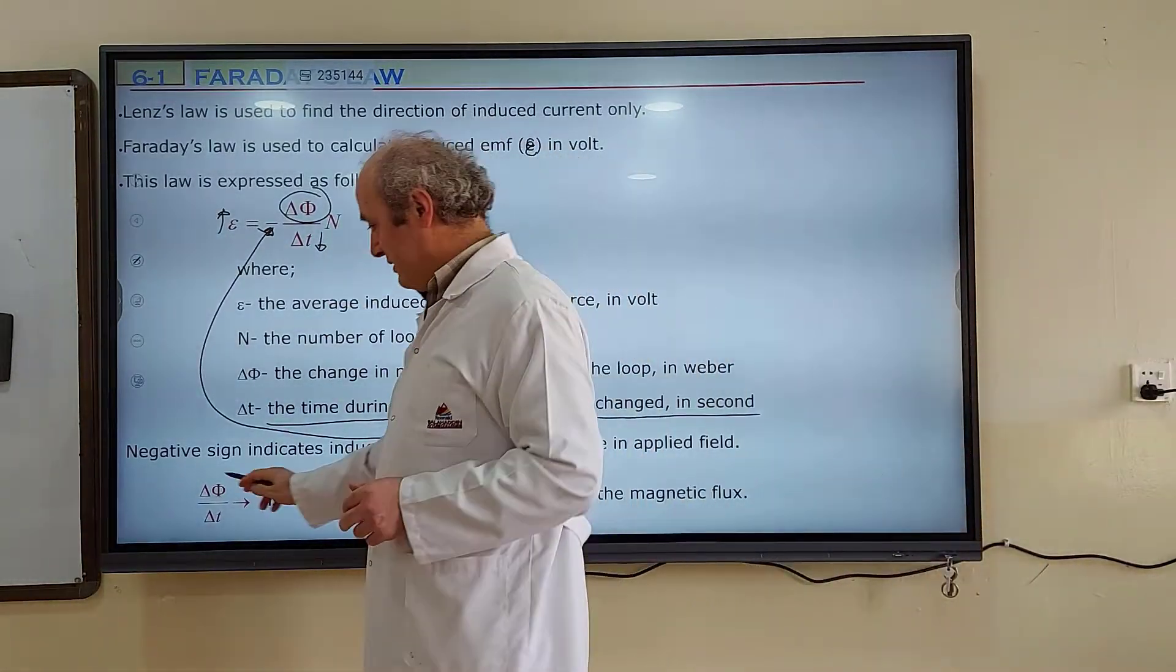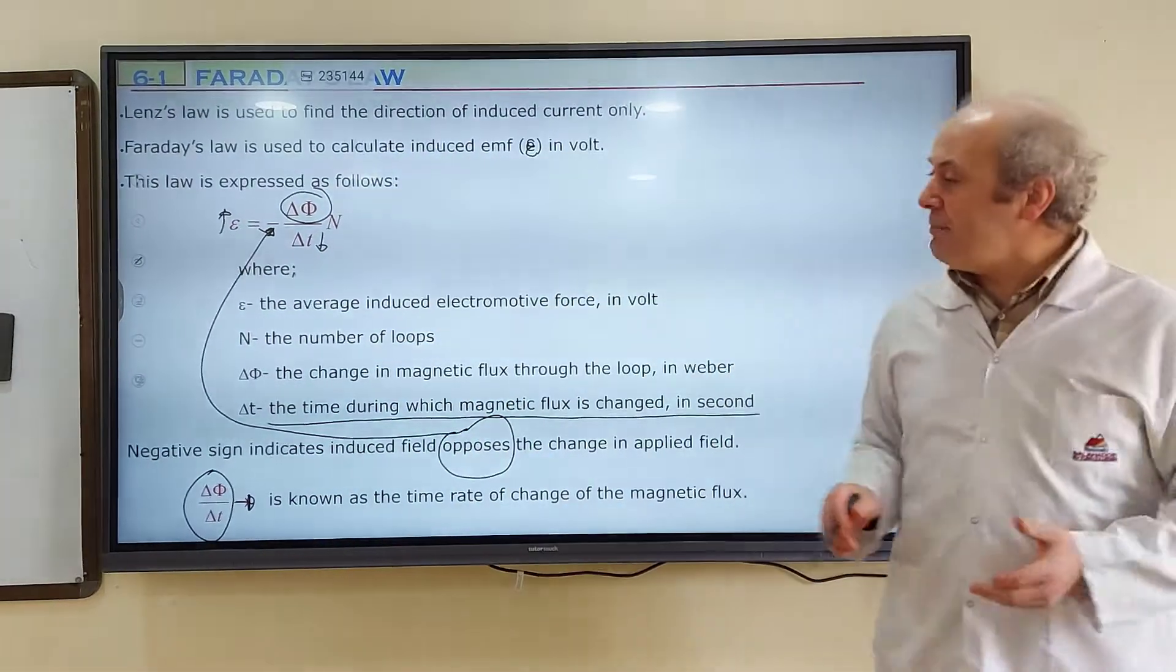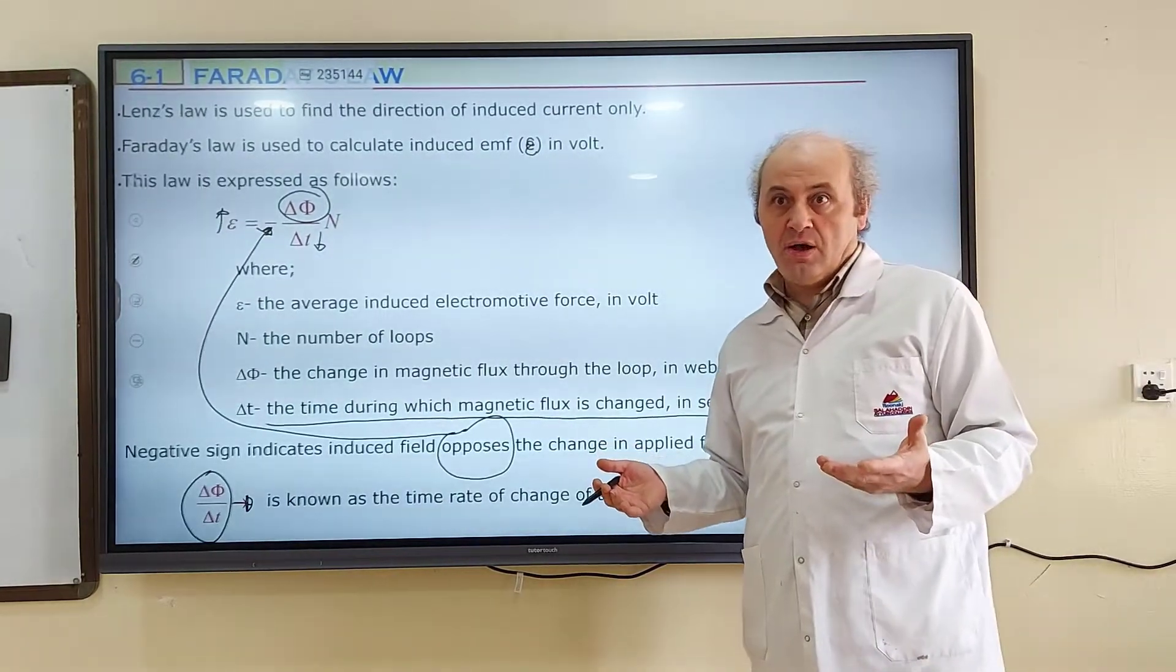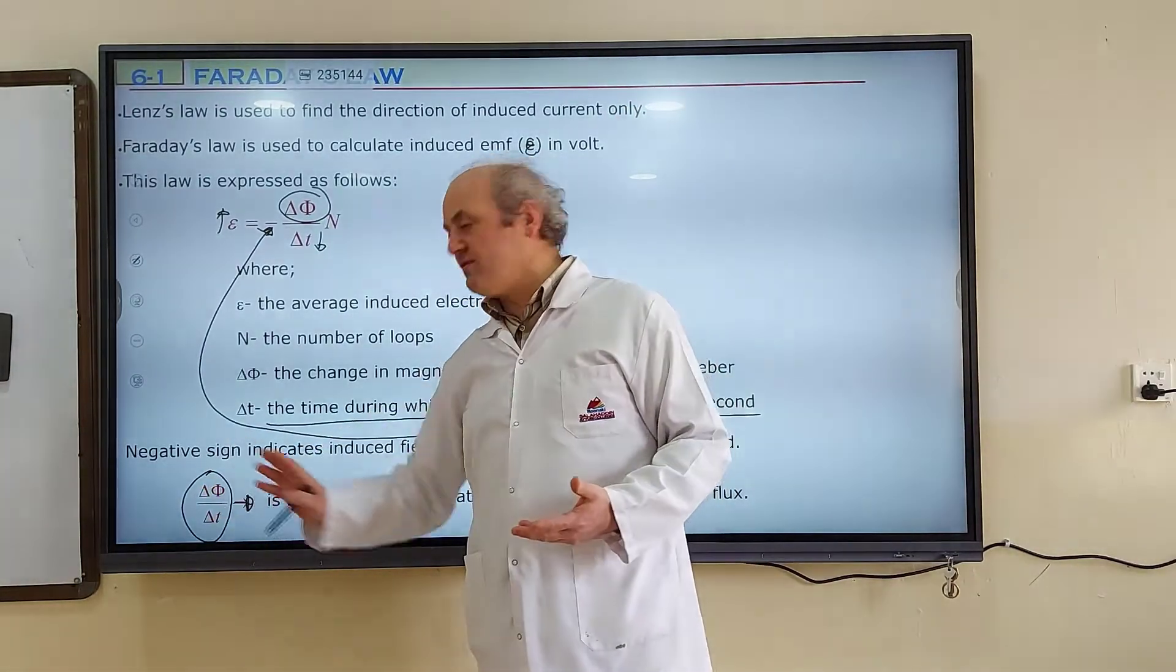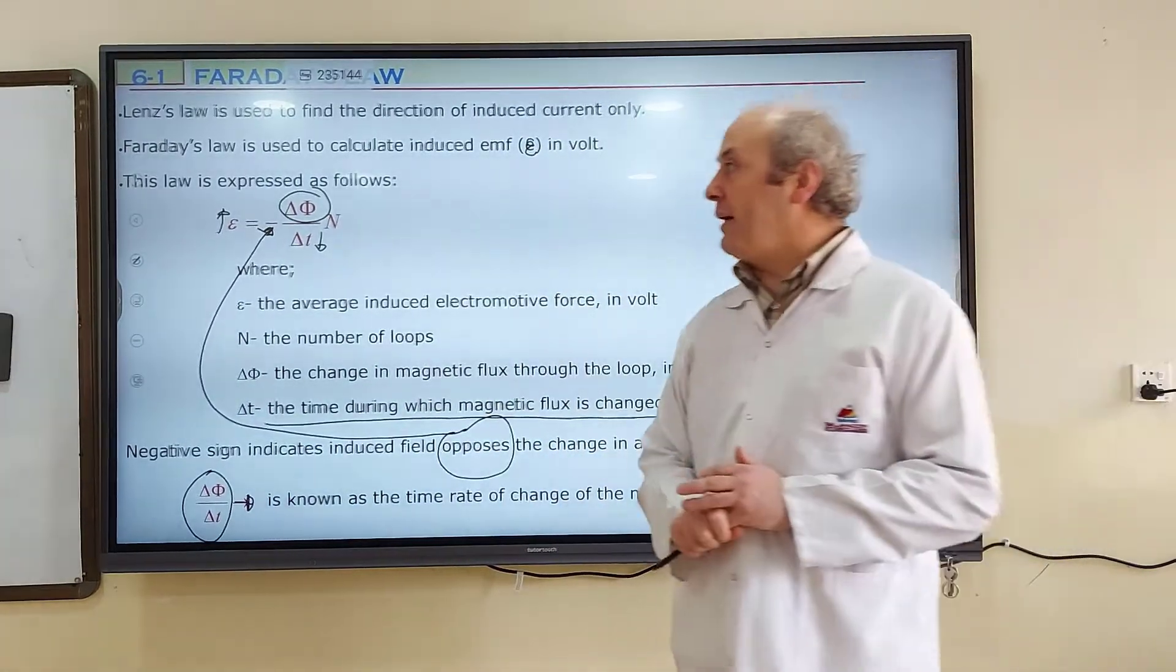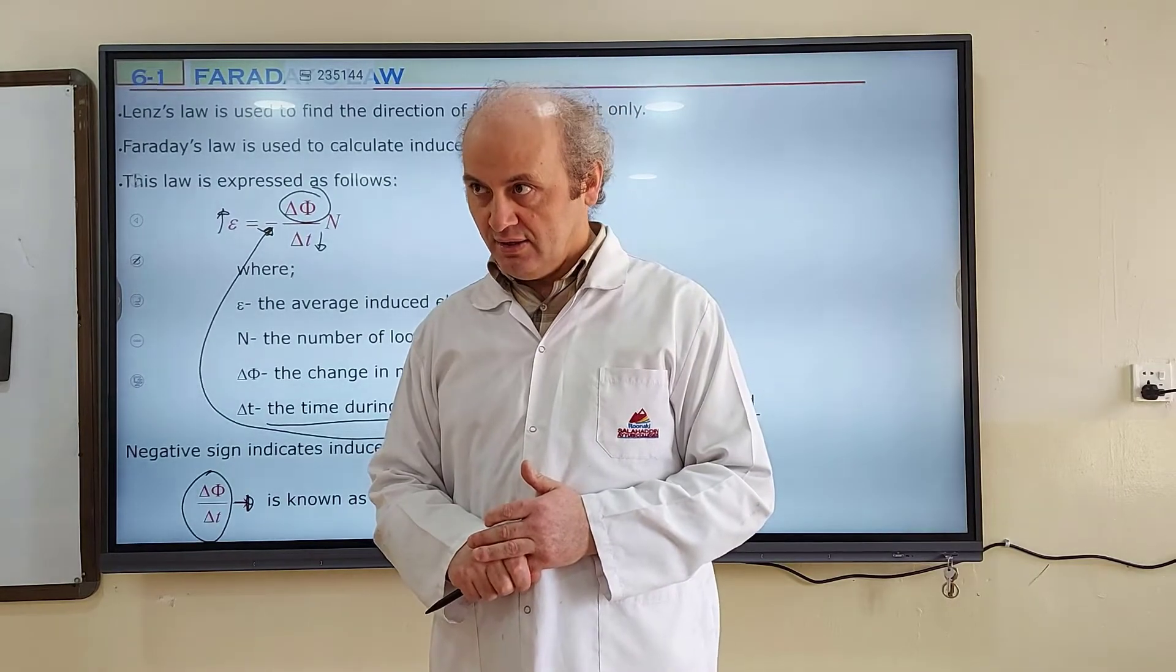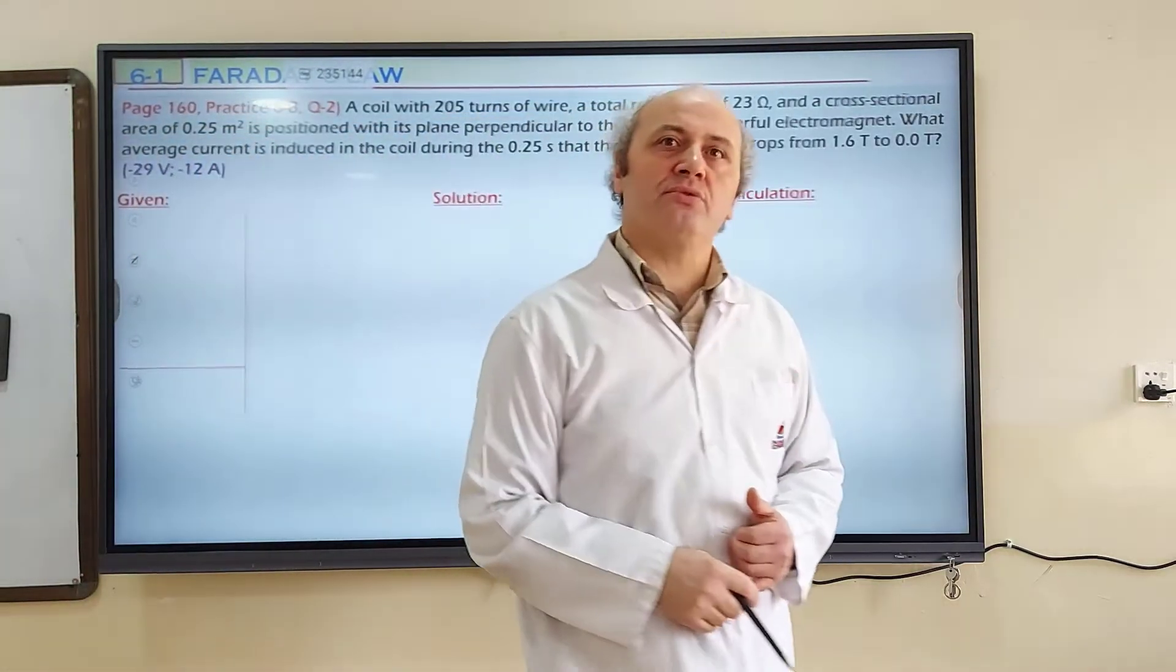Delta phi over delta t, in mathematics, is called the time rate of change of magnetic flux. Delta phi over delta t is the rate of change of magnetic flux. Maybe they can ask you a question: What is the time rate of change of magnetic flux? When they ask like this, we will calculate delta phi over delta t. Now let's solve a problem about this. Problems are very easy, not so hard in this section.